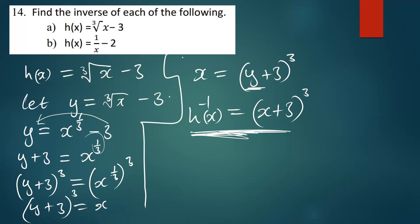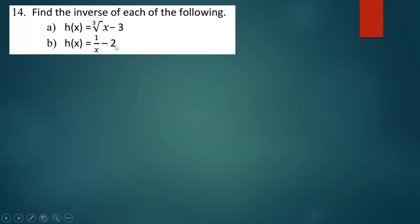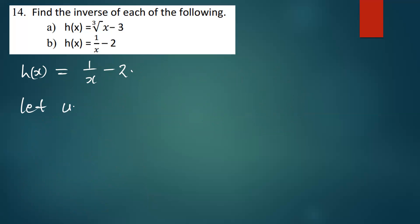Let's see how we can find h inverse of x for the next part, which is part b. The question is h of x equals one over x minus two. Like I said, we first let y be equal to one over x minus two.